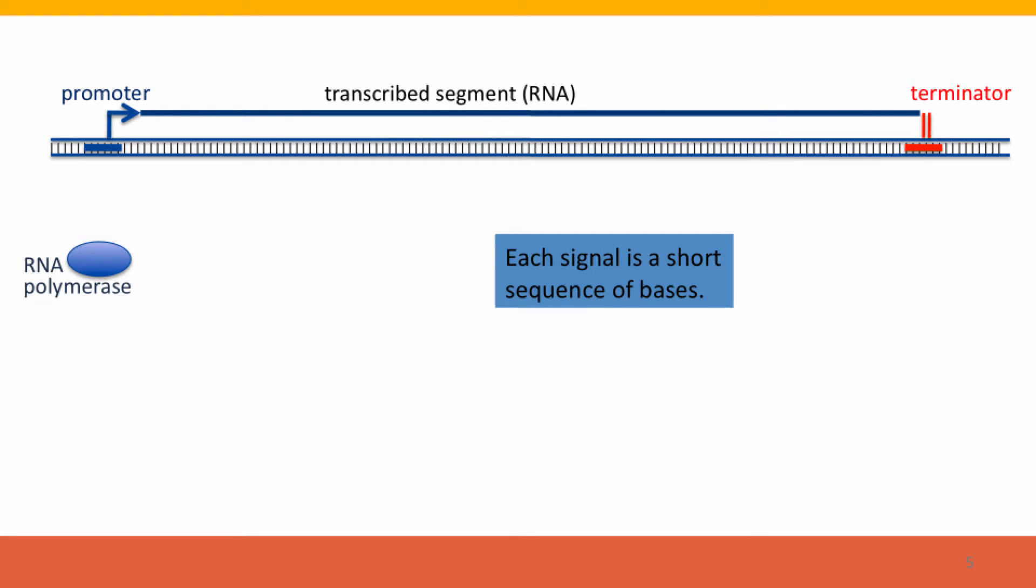Now, here's a diagram to give you some sense of how these regulatory signal sequences act. Each of these signals is a short sequence of bases, and in this diagram, again using what we said about representation, you'll see two lines representing double-stranded DNA with the cross-hatch marks to help remind us that these two lines represent DNA. This oval represents RNA polymerase. That's the enzyme that's going to carry out transcription.